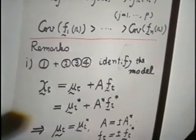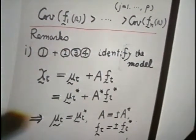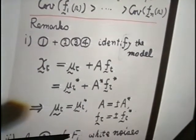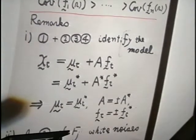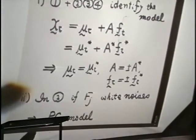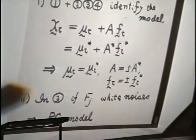Now, the implication of the model is as follows. First of all, one to one, which is the orthonormality condition, plus two, three, four, identifies the model uniquely, except the simultaneous sign change. In other words, if X is written in two ways, then coefficient and factor components are identified.